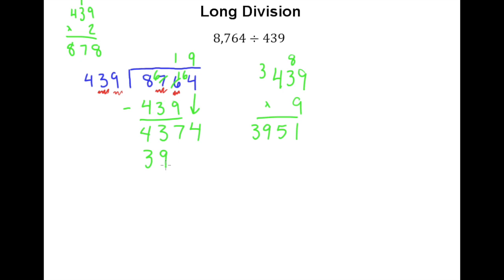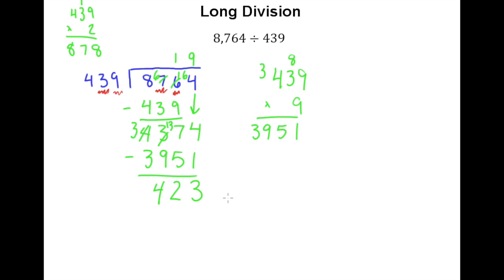3,951 is definitely smaller than 4,374, so it's not too big. And we know it's just right because we can't have a two-digit number in a single slot in the quotient. So we go ahead and subtract — with a little borrowing, making that a 13 — and we have a remainder of 423. So our answer is 19 with a remainder of 423.